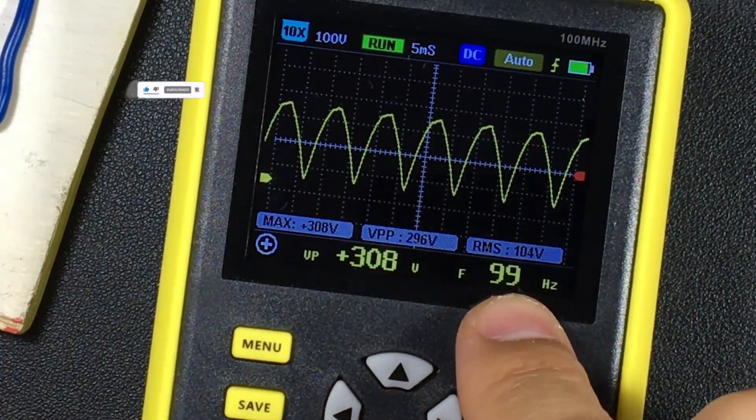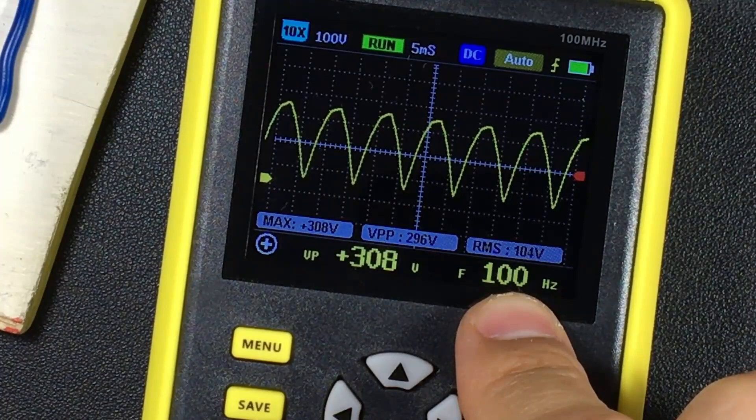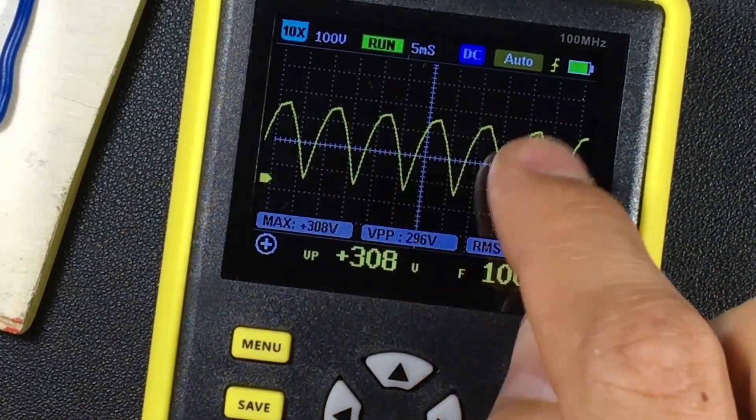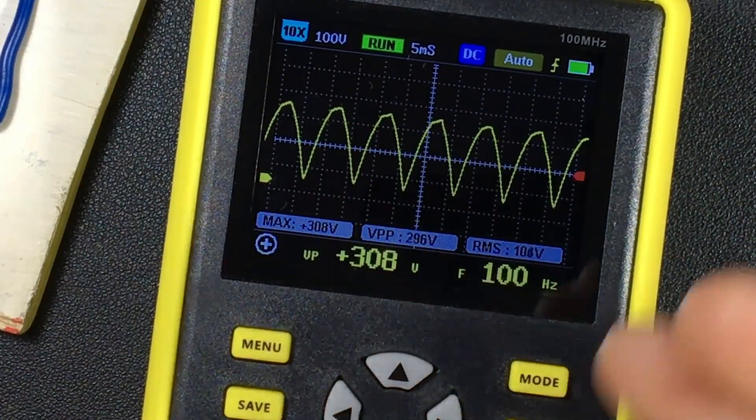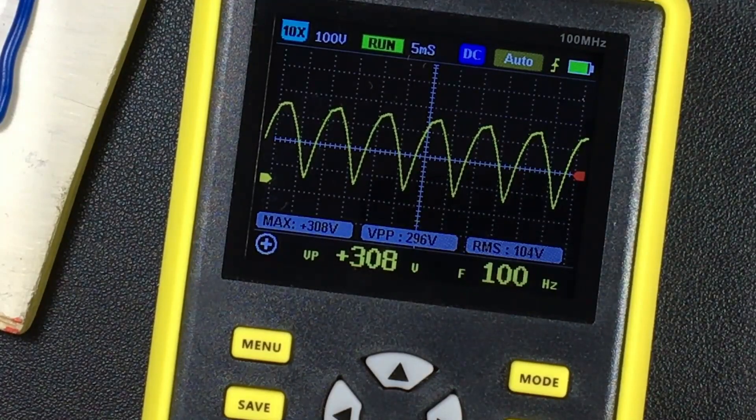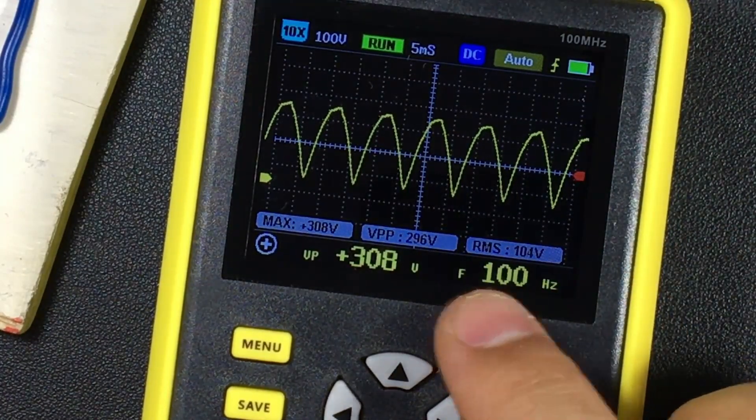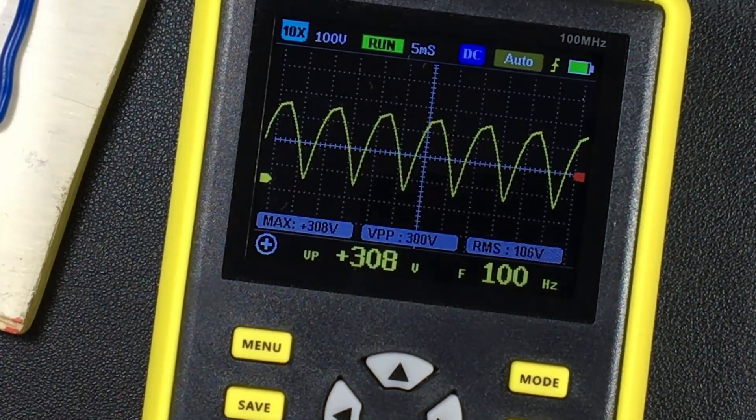And the frequency is 100 Hz, because it falls to zero 100 times. Twice the frequency of alternating current, if you have 60 Hz it will fall to zero 120 times.